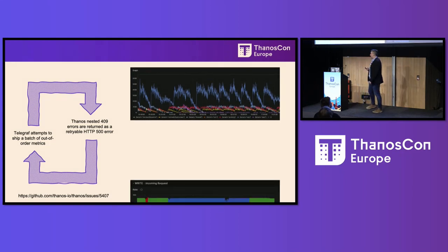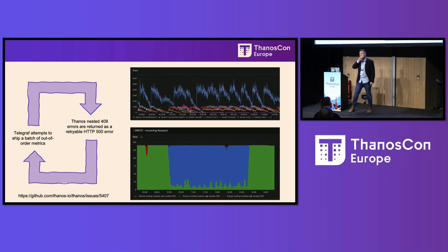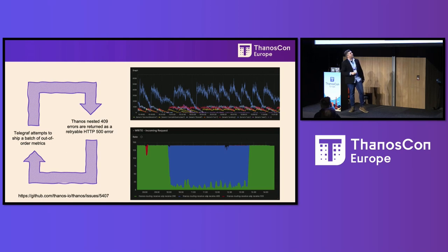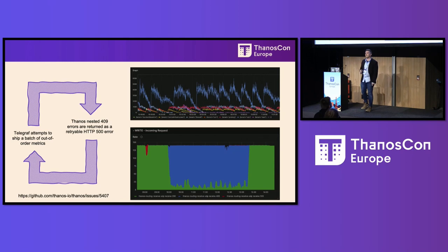The hypothesis was that Telegraf was shipping metrics out of bounds, Thanos responds with a 409, but the nested 409 gets interpreted as a retriable 500 by Telegraf and the cycle continues. Complete bull — it's not the case. The routing receiver was doing its job, actually responding with 409. Most entries in Telegraf logs were 409s, so Telegraf was really dropping the metrics. There were some 500s, but that wasn't the primary cause of this incident.